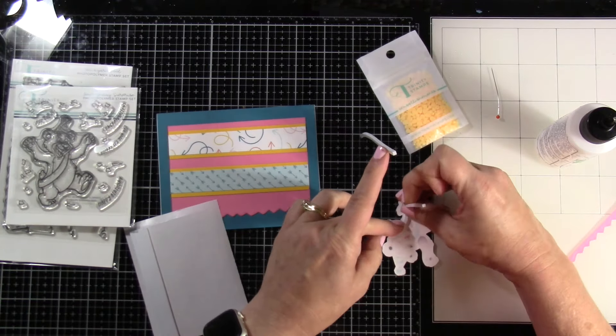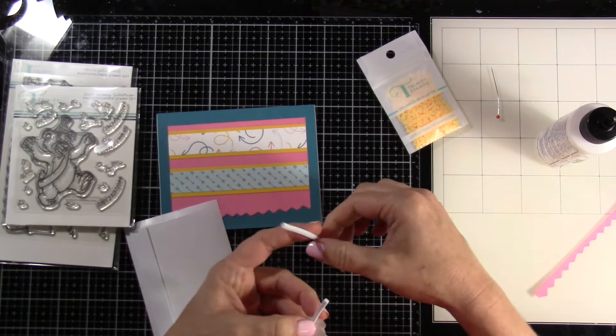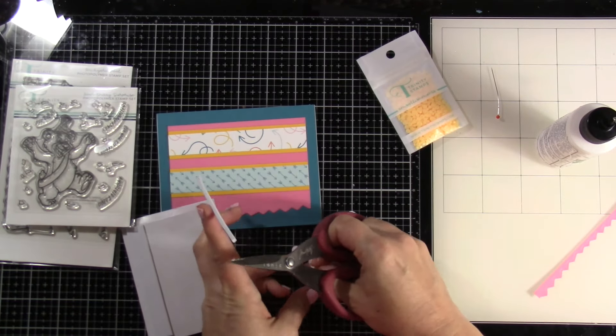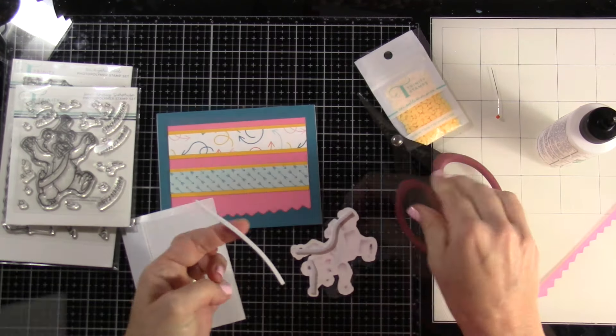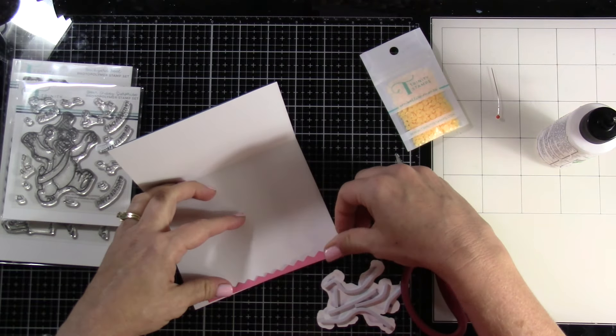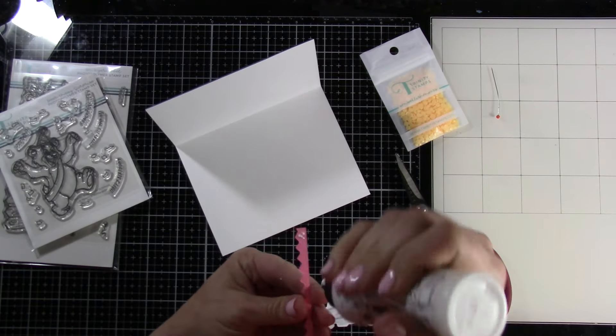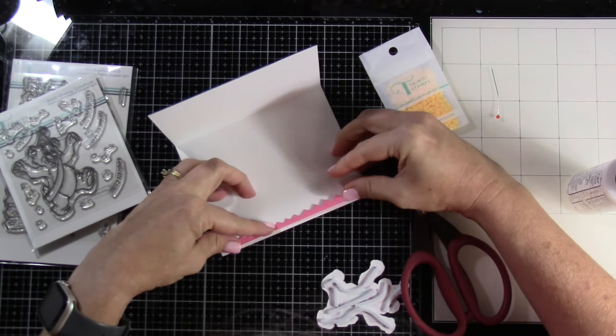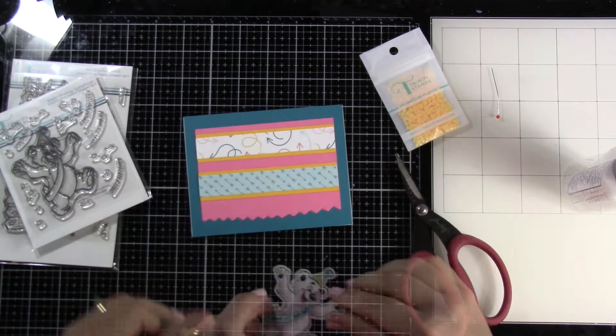And then for our bear, we're going to use some adhesive foam strips because I want him to pop up off that page a little bit. And as you can see, I've got some little rubber ducky embellishments that we'll use here in a second. I decide to bring in that leftover piece, because why not? And we'll just attach it to the inside of the card. Was it necessary? No, but I wanted to, so we did.